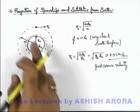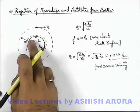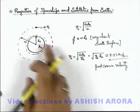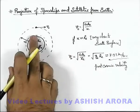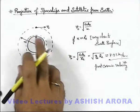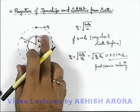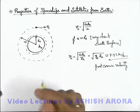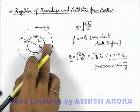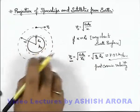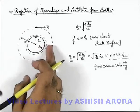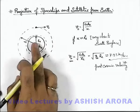Any velocity with which a body is thrown such that it will not come back on Earth is called cosmic velocity. This is the linear speed with which, when a body is thrown tangentially, it will start orbiting round the Earth as a satellite very close to Earth's surface and will not fall back. It will move on a circular orbit.